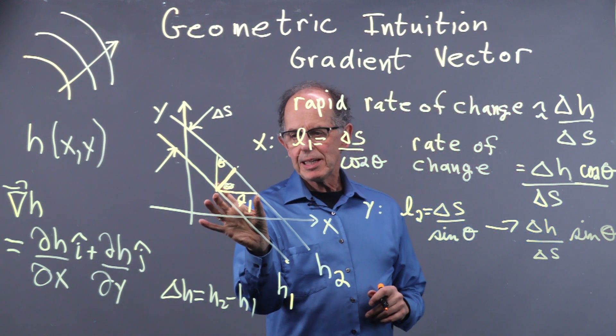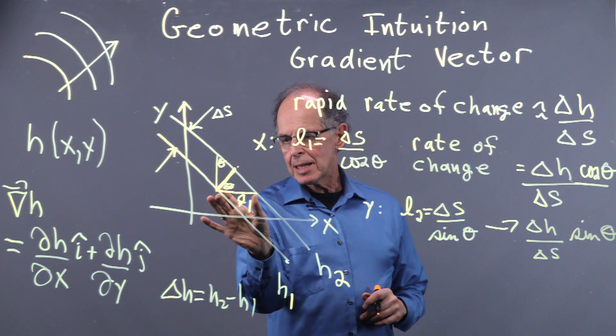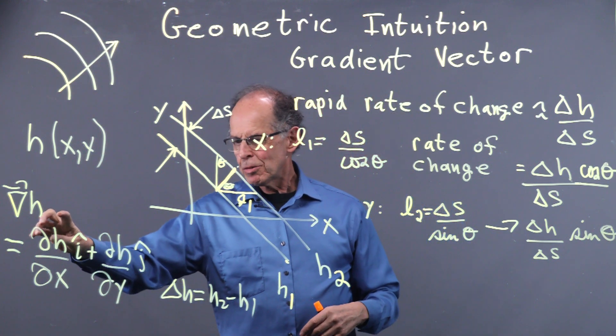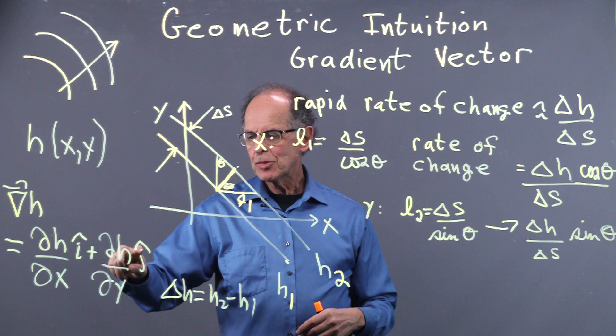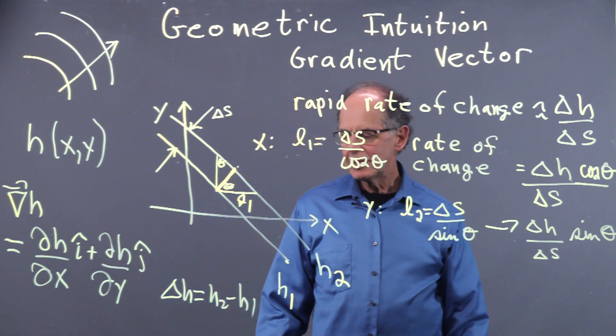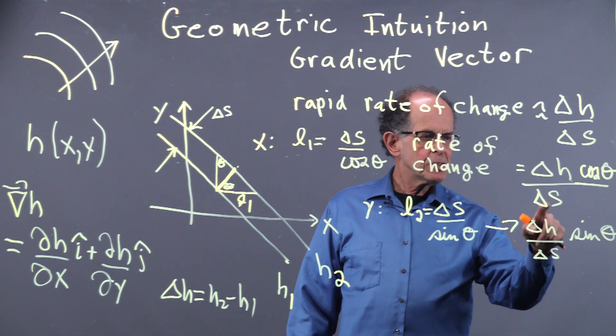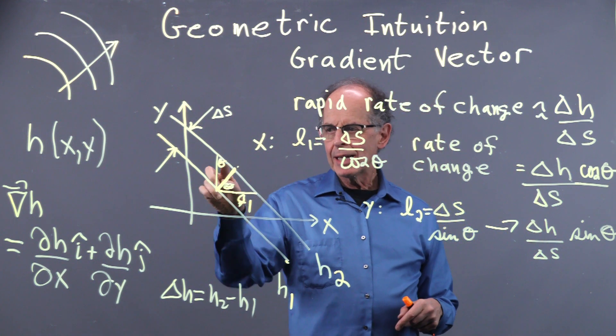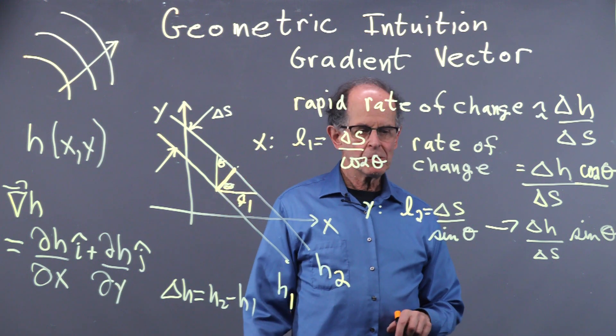So if we think of what this is, as we make it smaller and smaller, this corresponds to dH by dx, and this other piece here corresponds to dH by dy. If we take the magnitude of those rates of change and square them and add them up, what do we get?